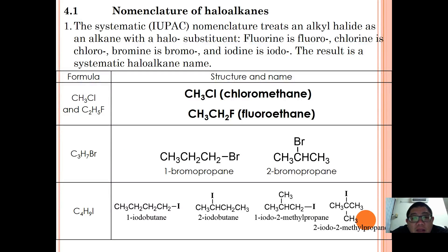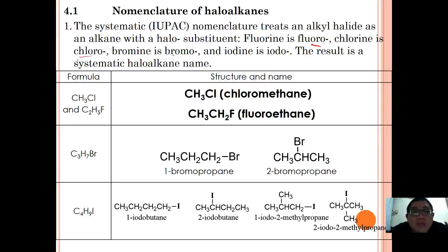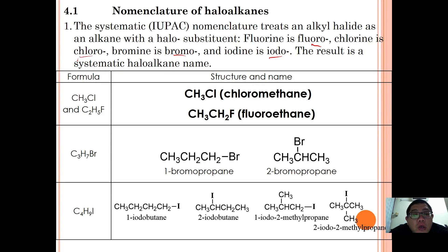For systematic IUPAC naming of haloalkanes, we treat halogens like normal substituents. The substituent names are: fluoro for fluorine, chloro for chlorine, bromo for bromine, and iodo for iodine. Simply treat any halogen like any substituent on an alkyl chain — for example, CH3Cl is named chloromethane and CH3CH2F is named fluoroethane.